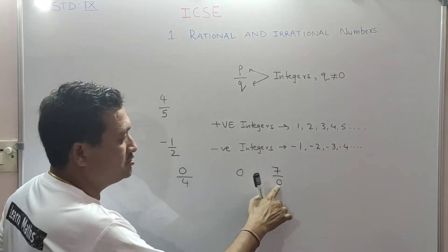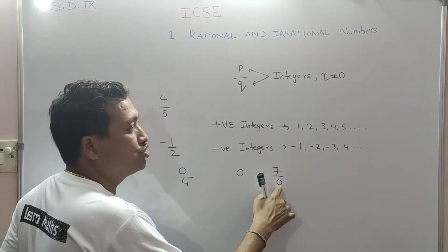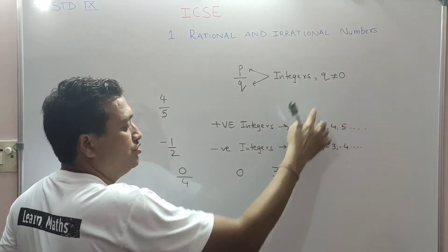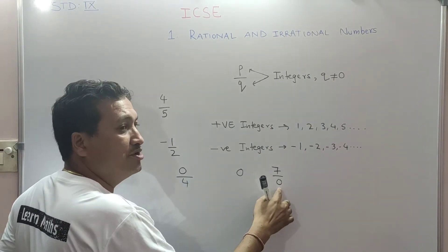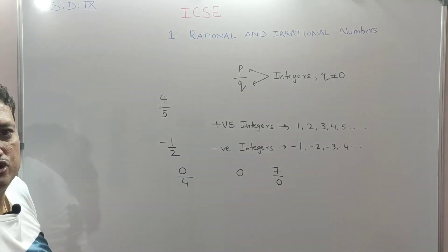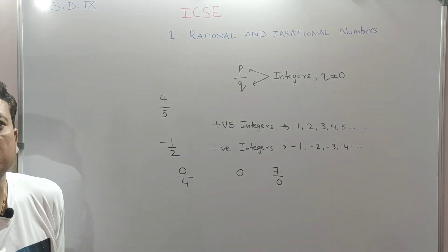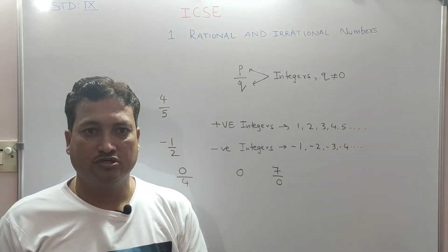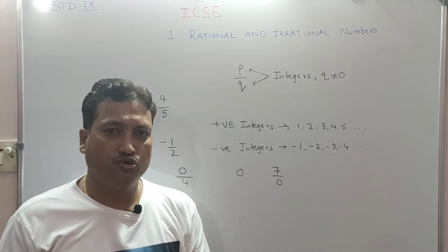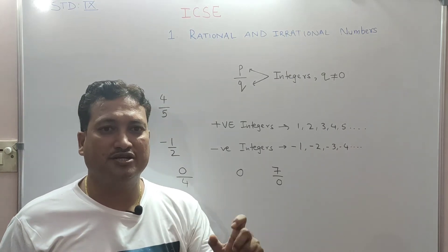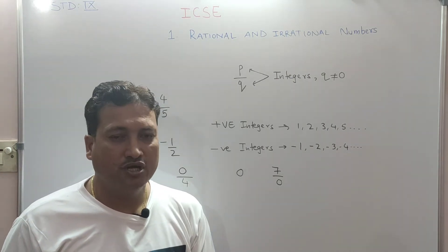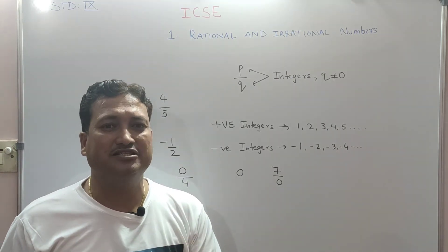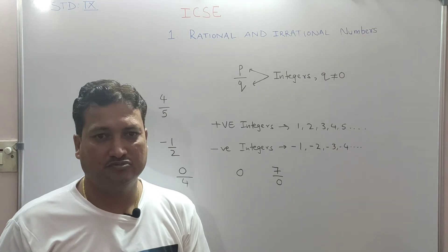The denominator should not be zero. You can see here the denominator is zero, therefore 7 upon 0 is not a rational number. So I think you have understood what a rational number is.